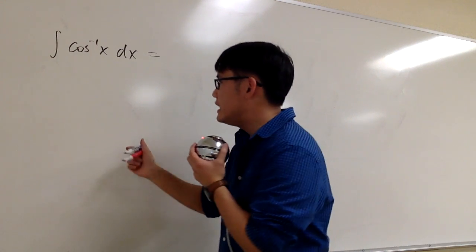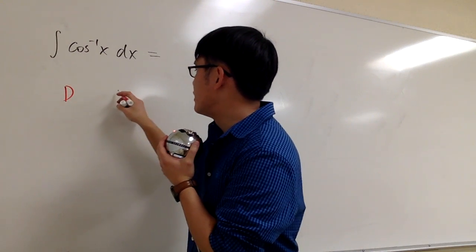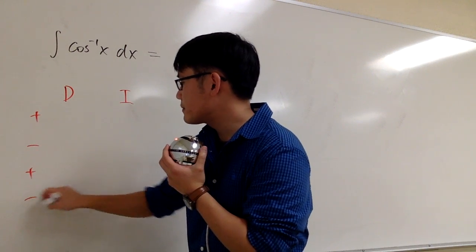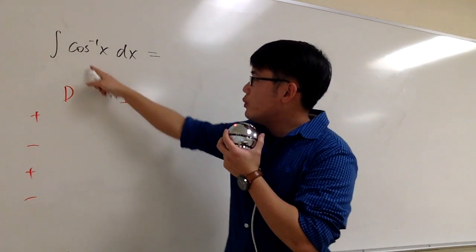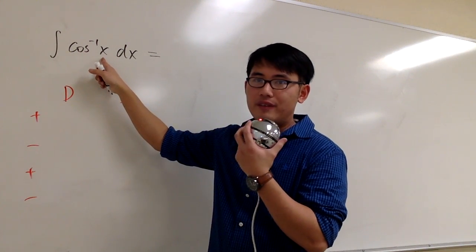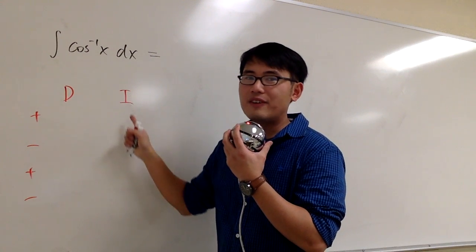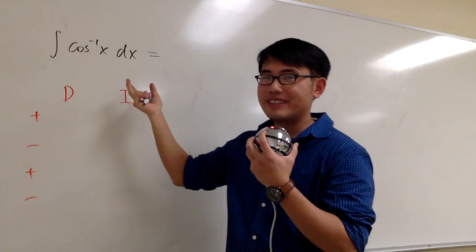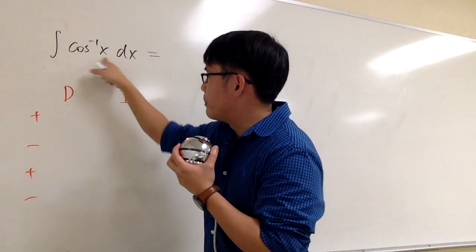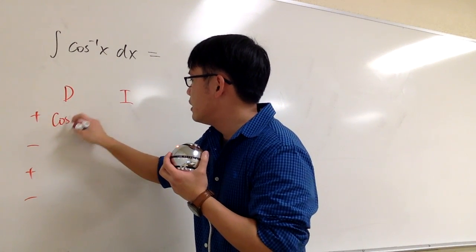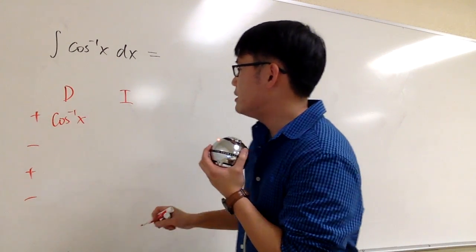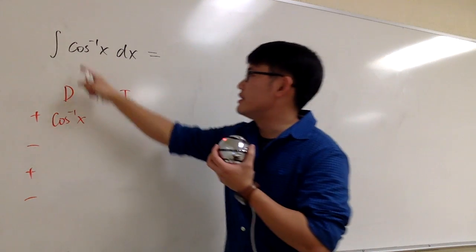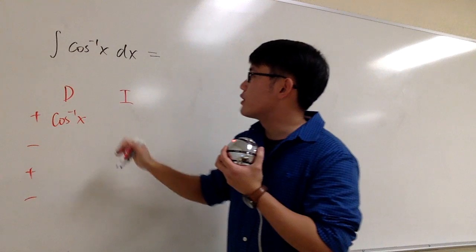I will set this up with the DI method. So I have the D and I columns, and let's get a plus-minus sign ready. We only have one function here, the inverse cosine. Don't put this down for the I column, because that's exactly what we're trying to integrate. We have no choice but to put this down for the D column. And for the I column, it's the number 1, because this is technically 1 times the inverse cosine.